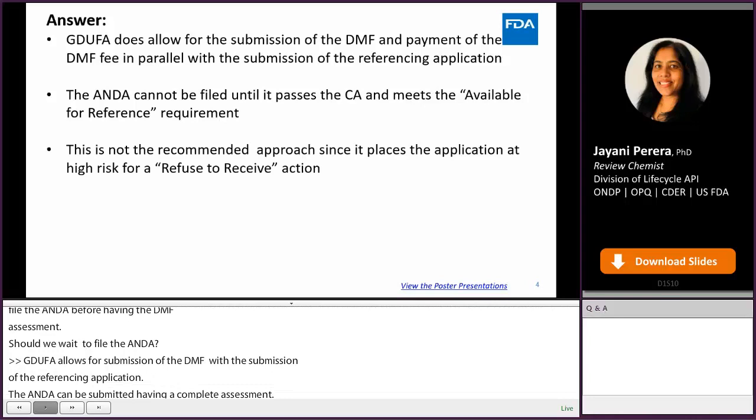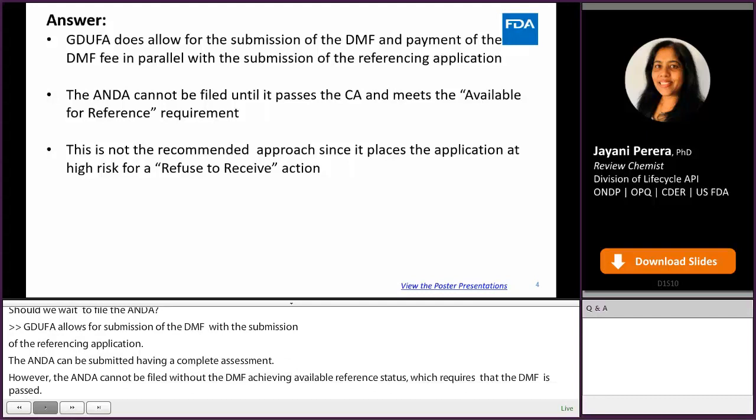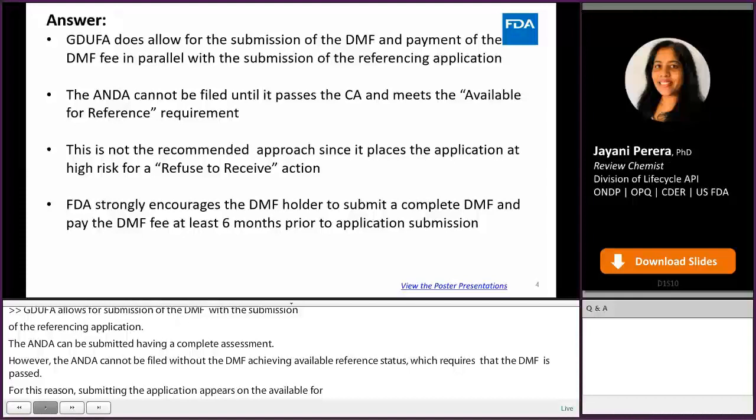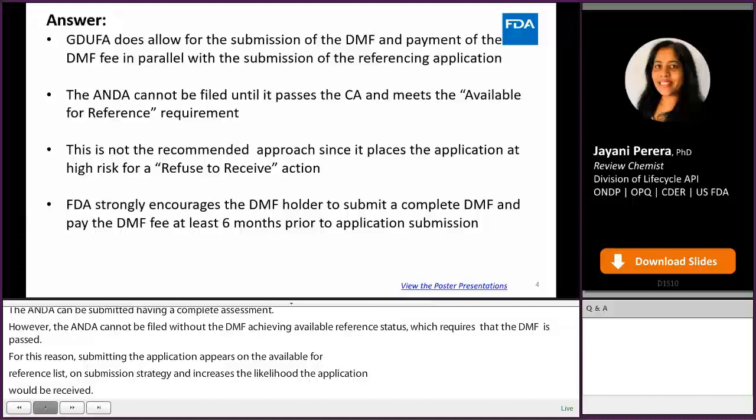For this reason, submitting the application when the DMF has not yet passed the CA and appears on the available-for-reference list is a high-risk submission strategy that increases the likelihood the application could be refused to receive. FDA strongly encourages the DMF holder to submit a complete DMF and pay the DMF fee at least 6 months prior to the submission of the ANDA or a prior approval supplement that will rely on the DMF.